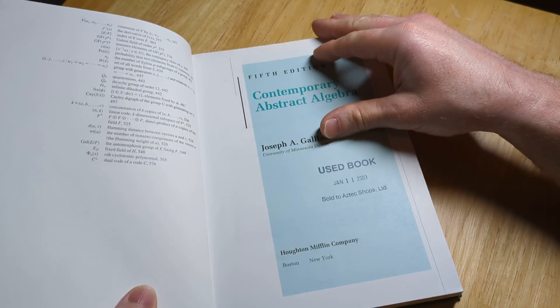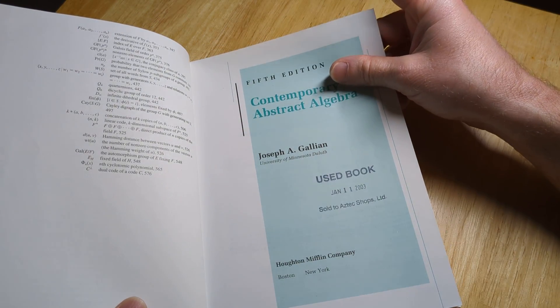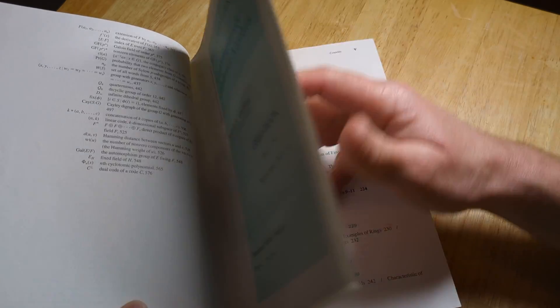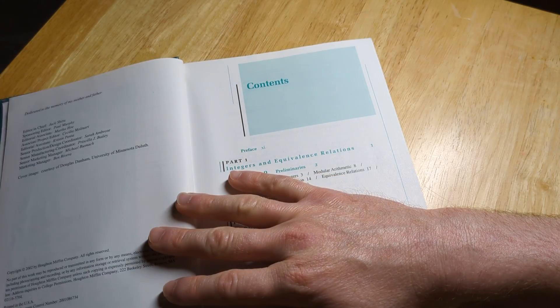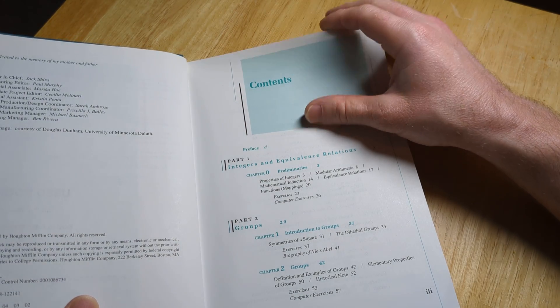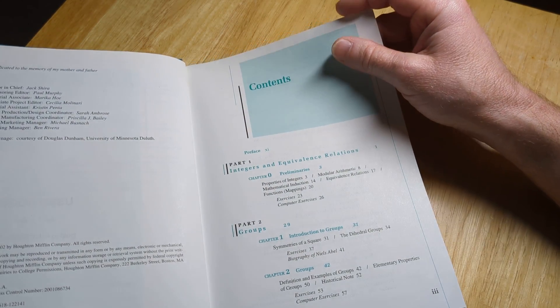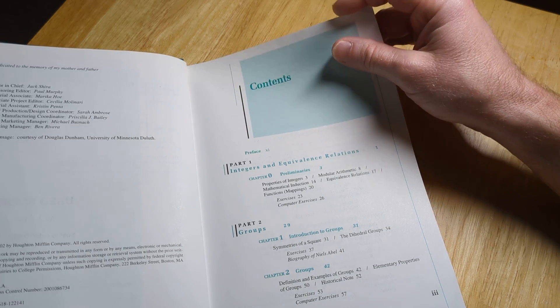So this is a book you can use to learn abstract algebra if you don't know a lot of it. The main prerequisite for learning something like abstract algebra is going to be proof writing.